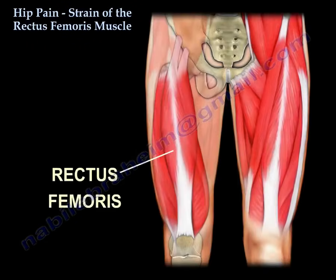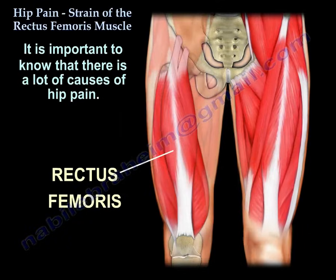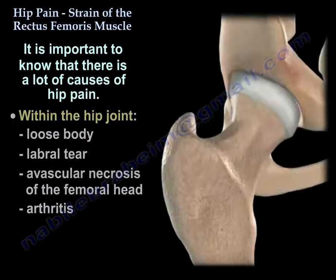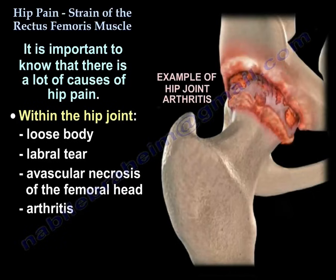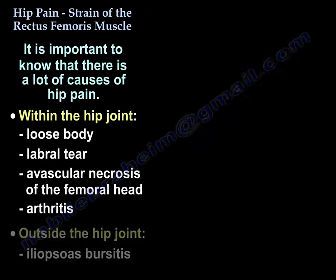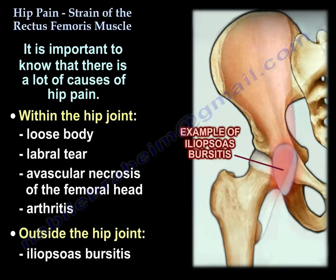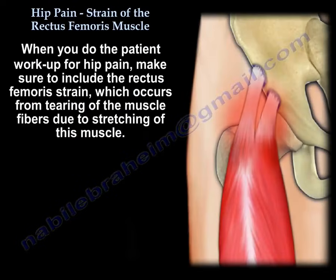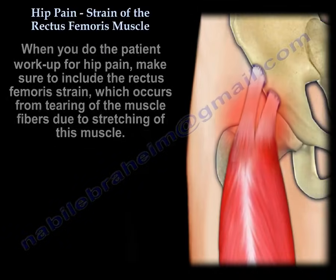Before we talk about the anatomy of the rectus femoris muscle, we want to know that there are many causes for hip pain, especially anterior hip pain. It can be something inside the joint like a loose body or labral tear, avascular necrosis of the femoral head, arthritis, or something outside the joint like the iliopsoas bursitis. When you work the patient up for hip pain, make sure you include the rectus femoris strain, which occurs from tearing of the muscle fibers due to stretching.